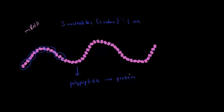Some proteins actually have more than one polypeptide chain — like the protein hemoglobin, for example. Hemoglobin is a protein in our blood that helps us carry oxygen, and it's made up of four polypeptide chains that are folded in a very precise shape or conformation.